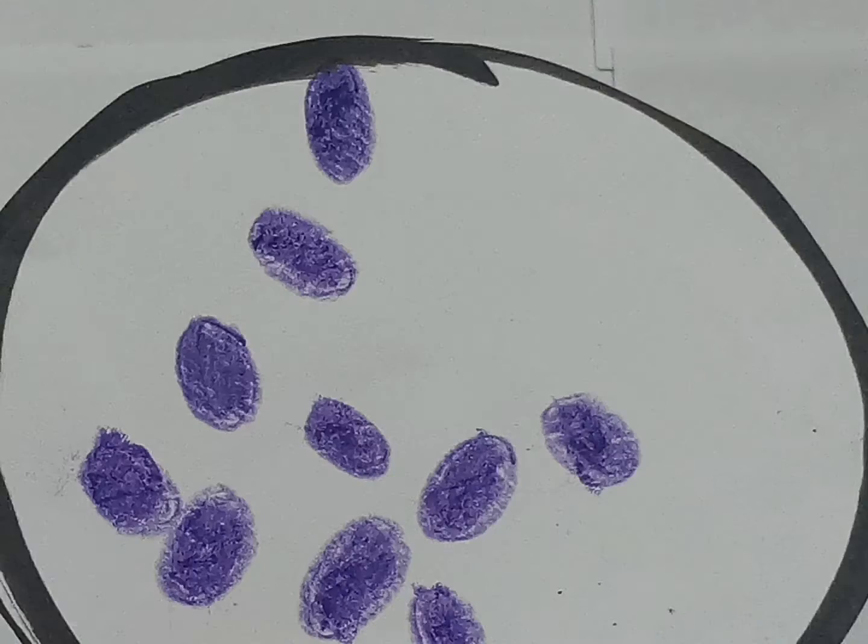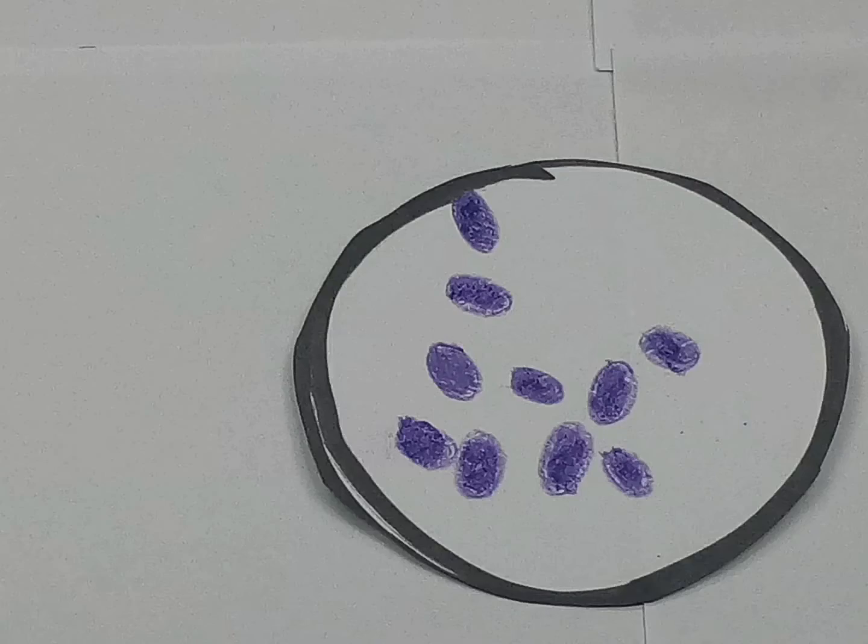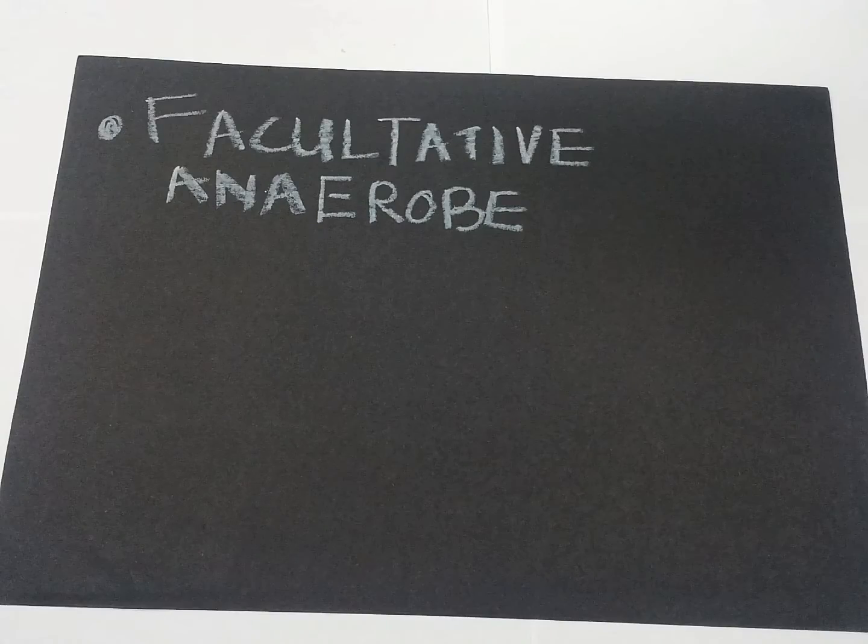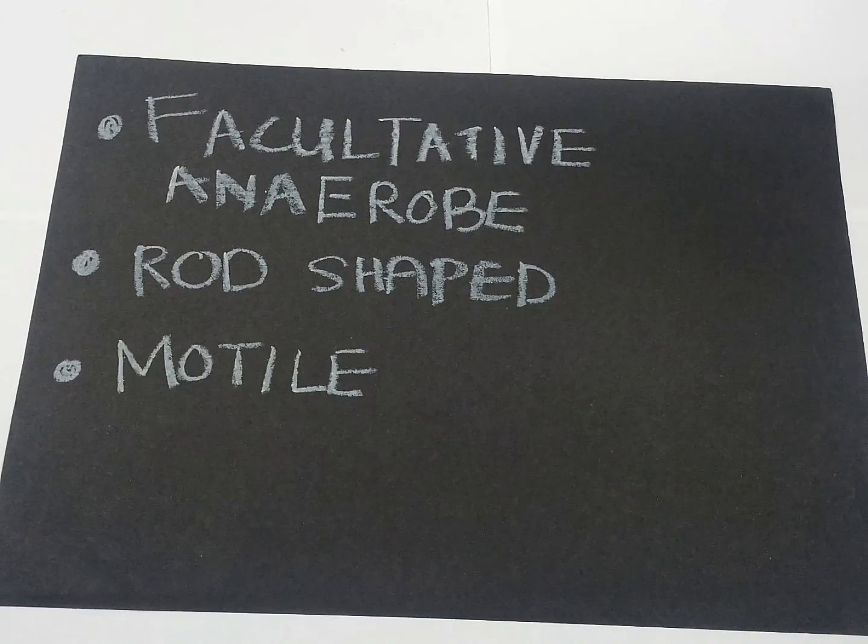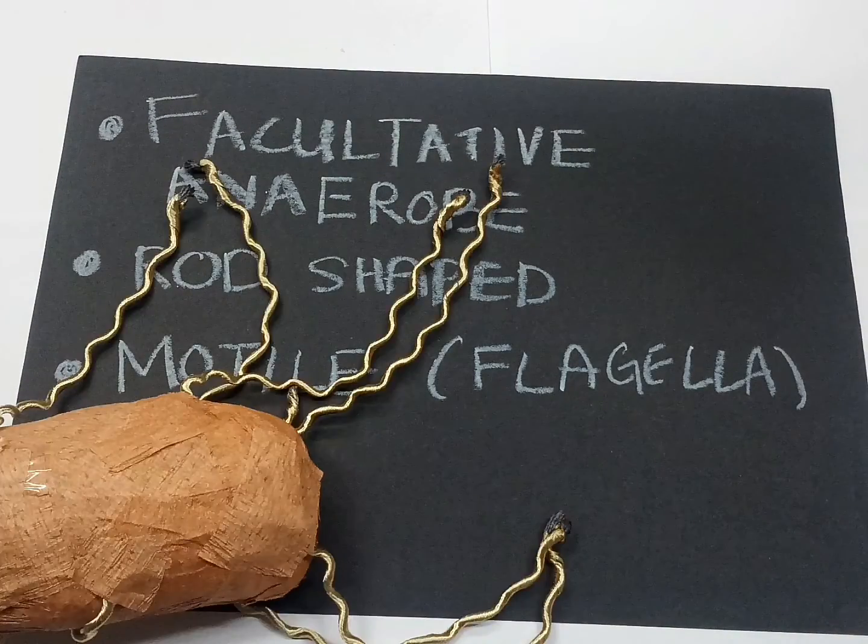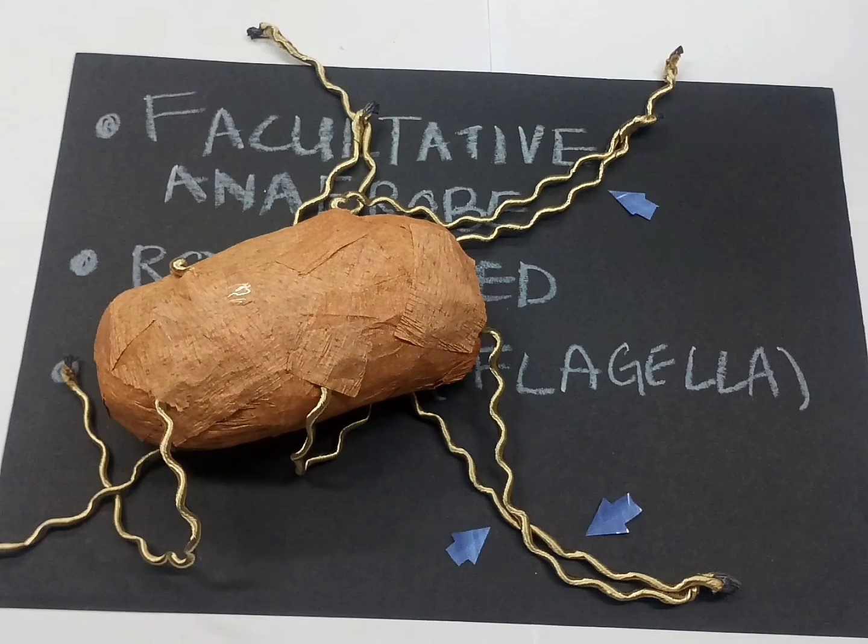Edwardsiella tarda is a gram-negative bacillus that belongs to the Enterobacteriaceae family and was first characterized in 1965. The bacterium is a facultative anaerobe, rod-shaped and motile. Its motility is due to peritrichous flagella.